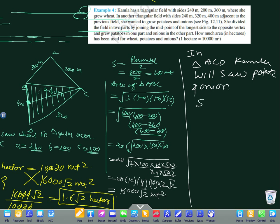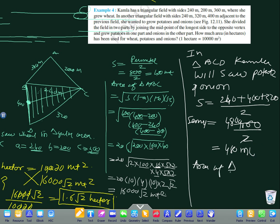S equals semi-perimeter. 960 divided by 2 equals 480 meters. Now area of triangle BCD equals the square root of s, s minus a, s minus b, s minus c.